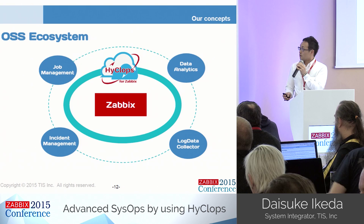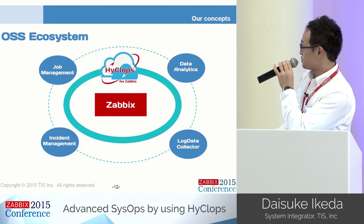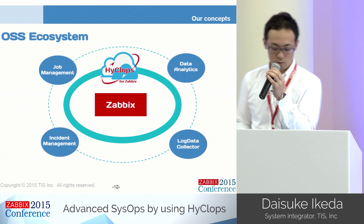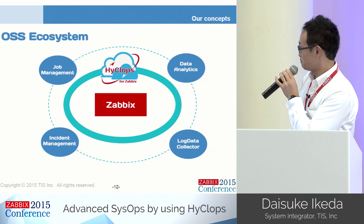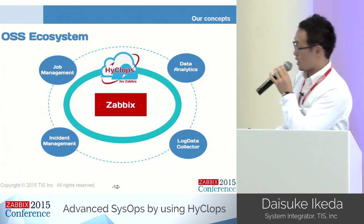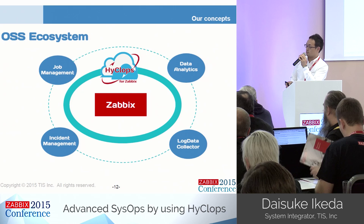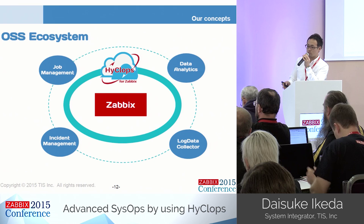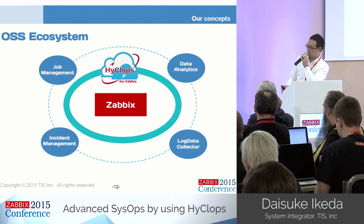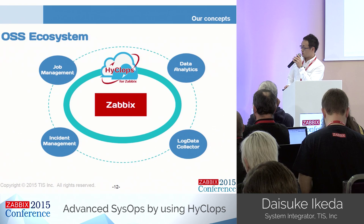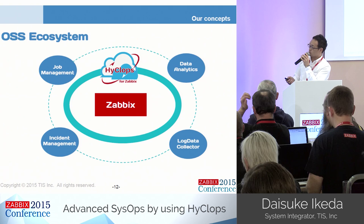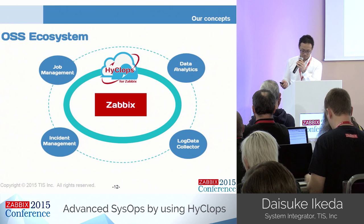In our concept, to achieve more advanced value, it is important not only to use Zabbix well, but also to cooperate with various OSS tools and services. Zabbix is specialized for monitoring, so it doesn't have job management features. I think job management features should be handled in another tool — for example, we are paying attention to job scheduler, which is OSS job controlling software. In this way, Hycrops should be developed to become a hub tool to achieve this kind of advanced value.